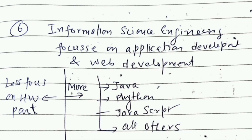Moving to the next branch — Information Science Engineering is a very popular branch that has been around for about 20 years. It focuses mainly on application development and web development. Anyone who loves coding and doesn't want to study hardware but wants to concentrate only on coding and programming — this is the best branch for them. That is why a lot of companies in solution development prefer CSE and ISC students, and ISC salaries are also very high.